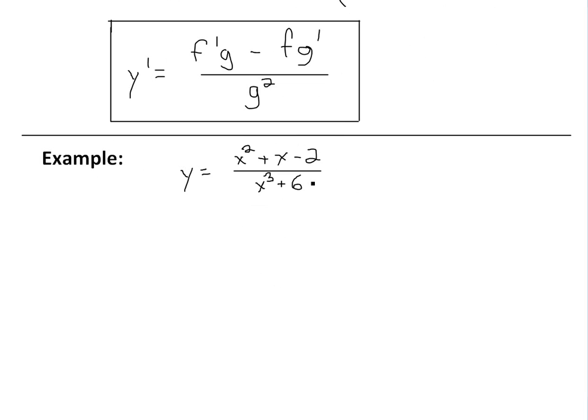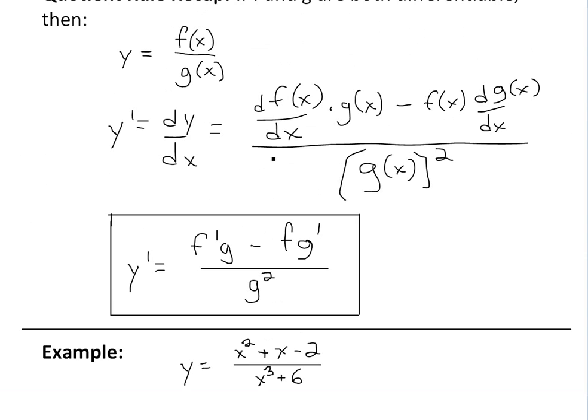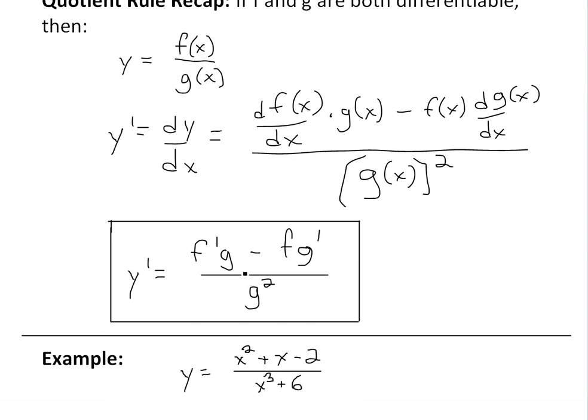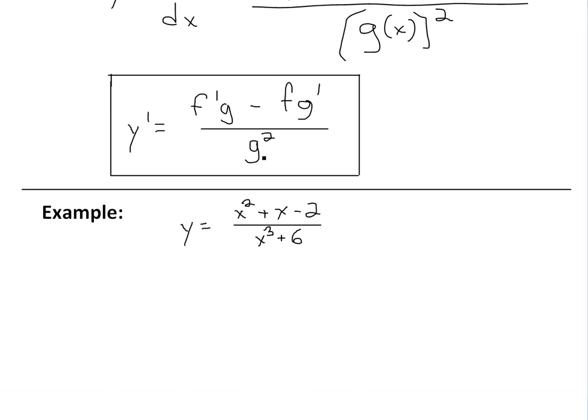So the example I want to go over is this one right here. It's a quick example on the quotient rule: y equals (x² + x - 2) divided by (x³ + 6). This example, like all examples using quotient rules, gets pretty complex with a lot of algebra.